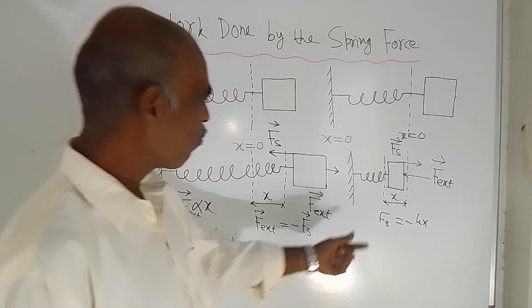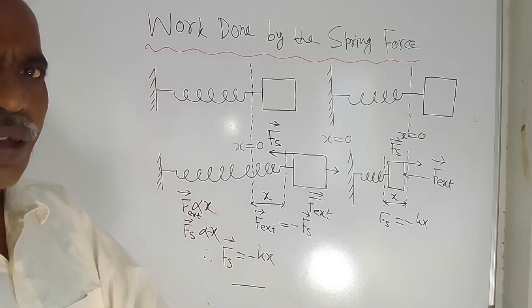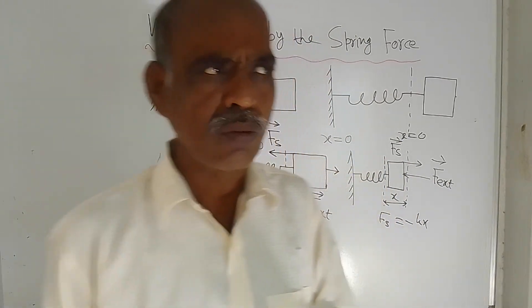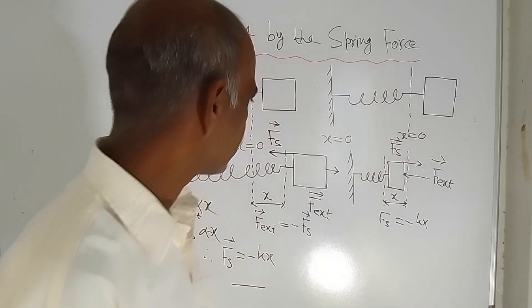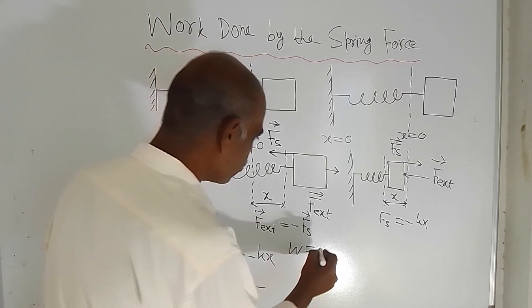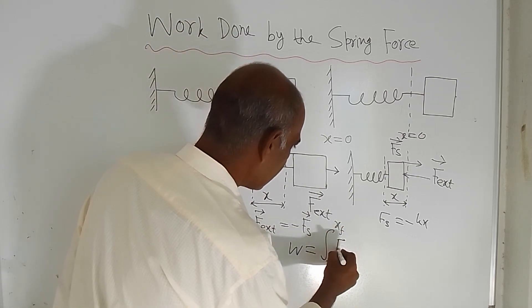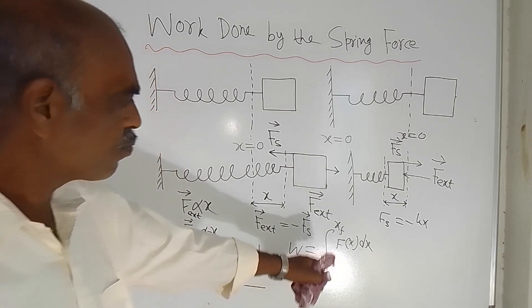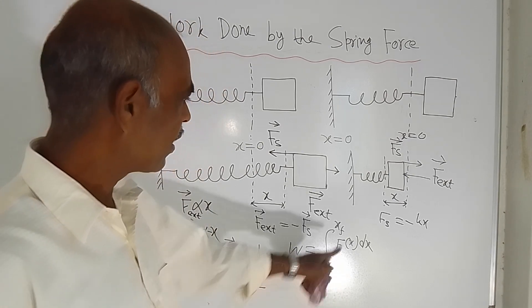Now you can see that force is not a constant — it depends upon the displacement X, so force is a variable. In case of a variable force, you know how to calculate work done from the topic 'work done by a variable force.' W equals the integration of F(x) dx, with integration limits from Xi to Xf. Here Fx is force, dx is elemental displacement, Xi is the initial position, and Xf is the final position.